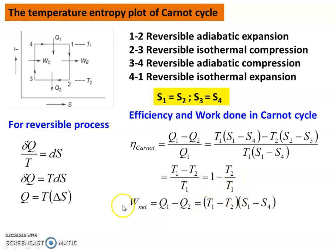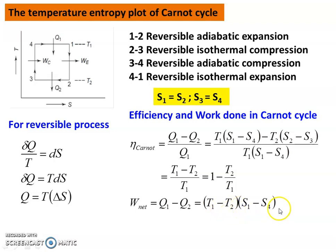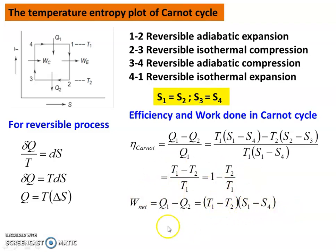For net work done during the cycle: W_net equals net heat transfer Q1 minus Q2, by the first law of thermodynamics. Substituting, Q1 equals T1·(S1 minus S4) and Q2 equals T2·(S1 minus S4), so W_net equals (T1 minus T2)·(S1 minus S4).